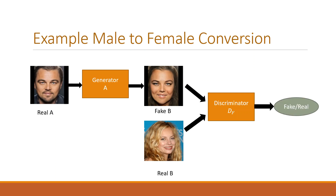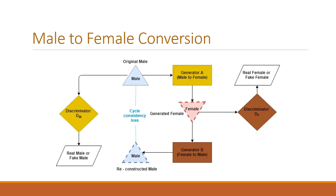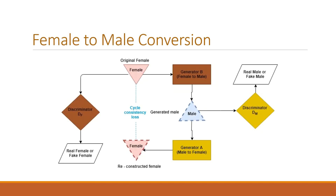The discriminator produces an output saying whether the image is fake or real, and this output is used to train both the generator and the discriminator. This slide shows the block diagram for male-to-female conversion, and this slide shows the end-to-end block diagram for female-to-male conversion.